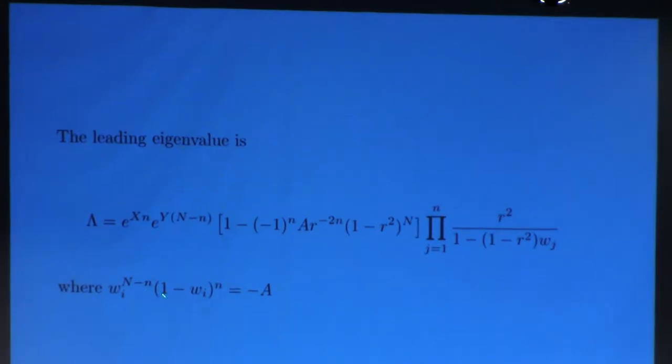And so these w's satisfy some simple polynomial equation where this is our constant on the previous slide. So now you can see that everything is perfectly computable, right?